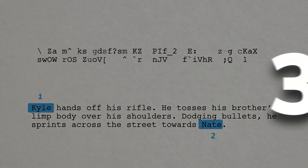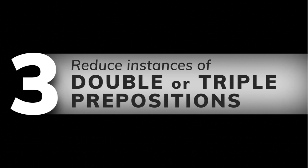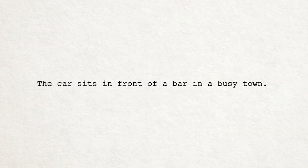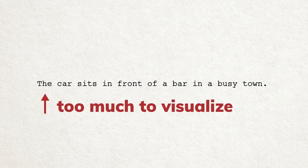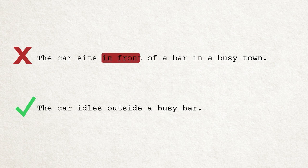Number three: reduce instances of double or triple prepositions. For example: 'The car sits in front of a bar in a busy town' — there's way too much going on for the reader to visualize. You could fix it by saying: 'The car idles outside a busy bar.' This is similar to having too many character names in one sentence. When you have too many prepositional phrases, the reader has to think harder about what they are actually seeing, and this takes them out of the story.